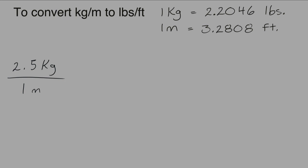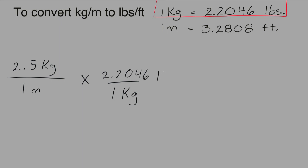When you multiply fractions, if you have the same number or variable in the numerator and the denominator, you can cancel them out. So we'll want to cancel the kilograms by placing them on the bottom. We know from our conversion factor that one kilogram is equal to 2.2046 pounds, so now the kilograms can be cancelled out.